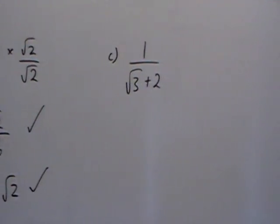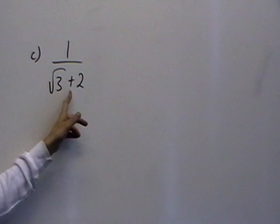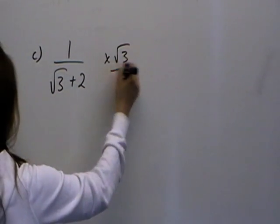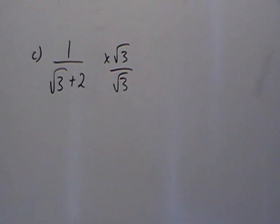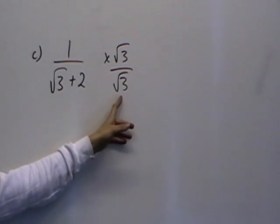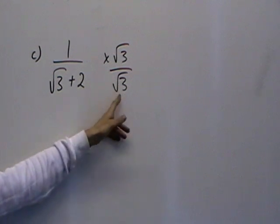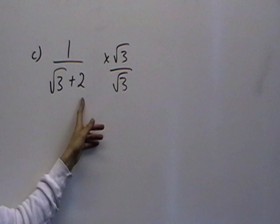Part c is a little bit more difficult because we've got 1 over root 3 plus 2. Now if we were to go along with the same method and multiply the top and the bottom by root 3, you will find that the bottom still has a surd in the answer, which is not what we're after. So that method is not going to work when we've got root 3 plus 2 on the bottom.